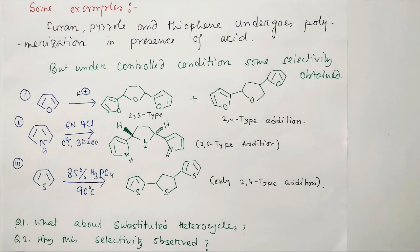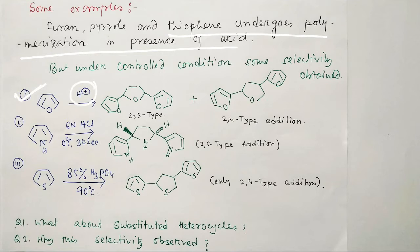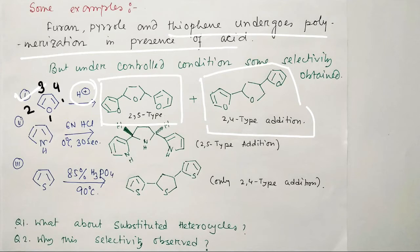Generally, furan, pyrrole, and thiophene undergo polymerization in the presence of acid. But under controlled conditions we can get selective products. In the case of furan with dilute acid (H⁺), two products are formed: a 2,5-type addition and a 2,4-type addition. The nomenclature: the heteroatom is position 1, then positions 2, 3, 4, 5 going around the ring. So 2,5-substitution means positions 2 and 5 are involved, and 2,4-substitution means positions 2 and 4.